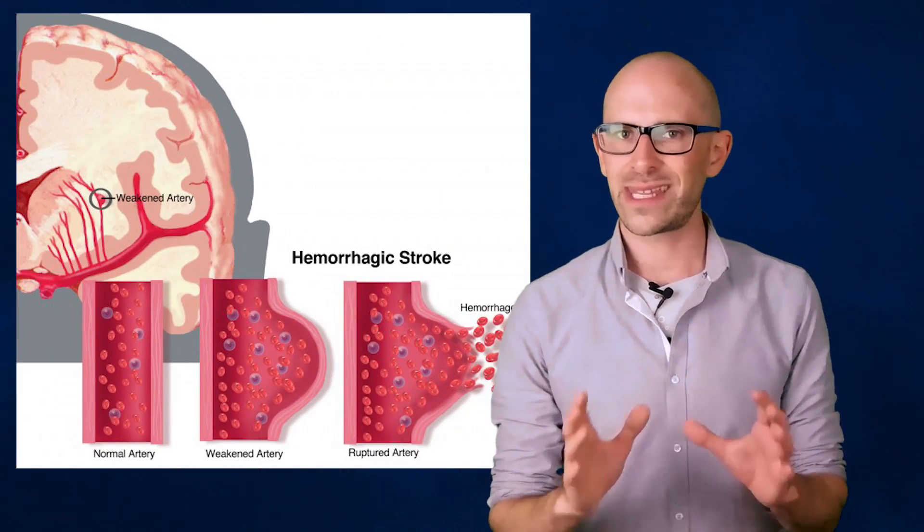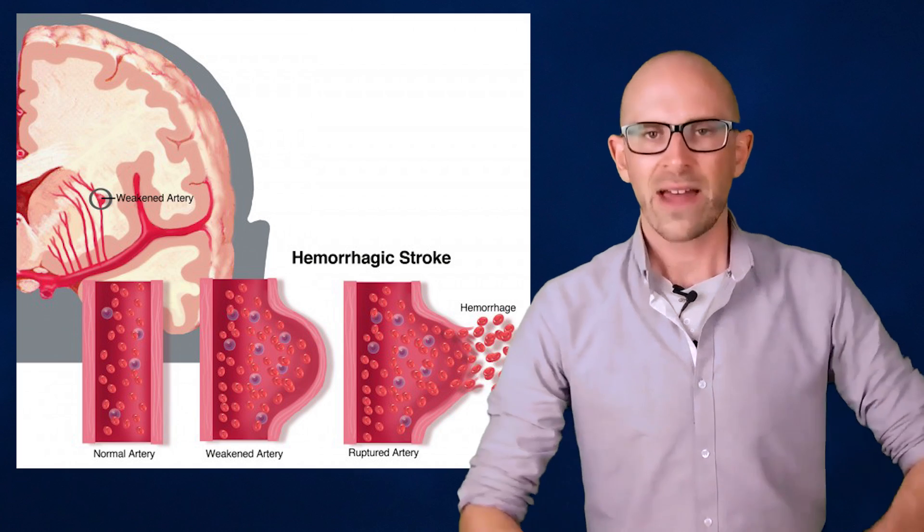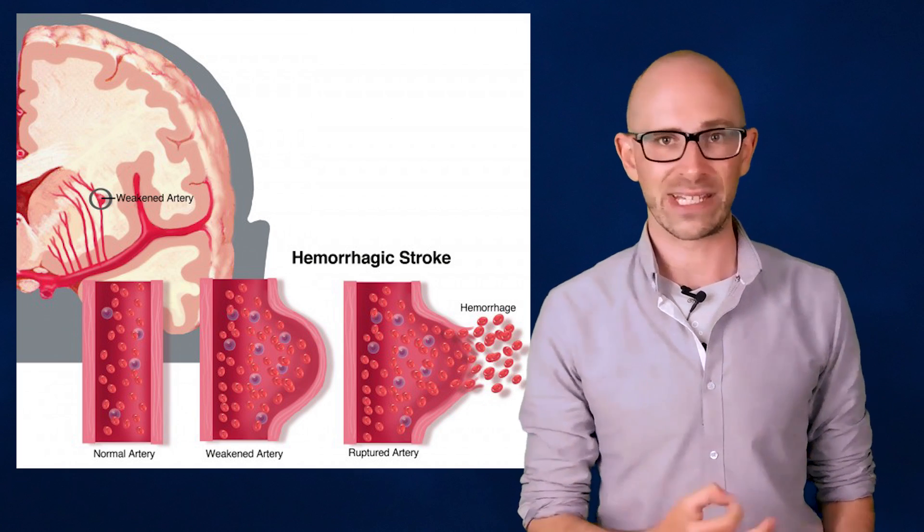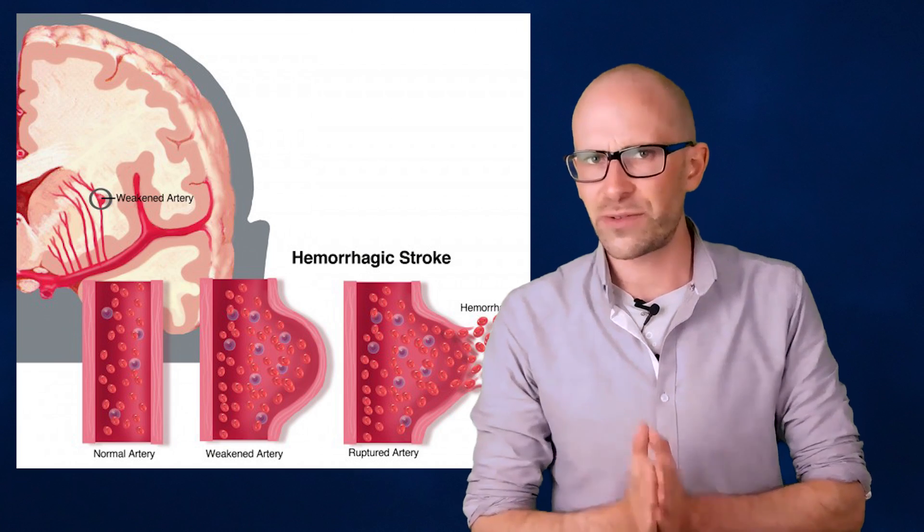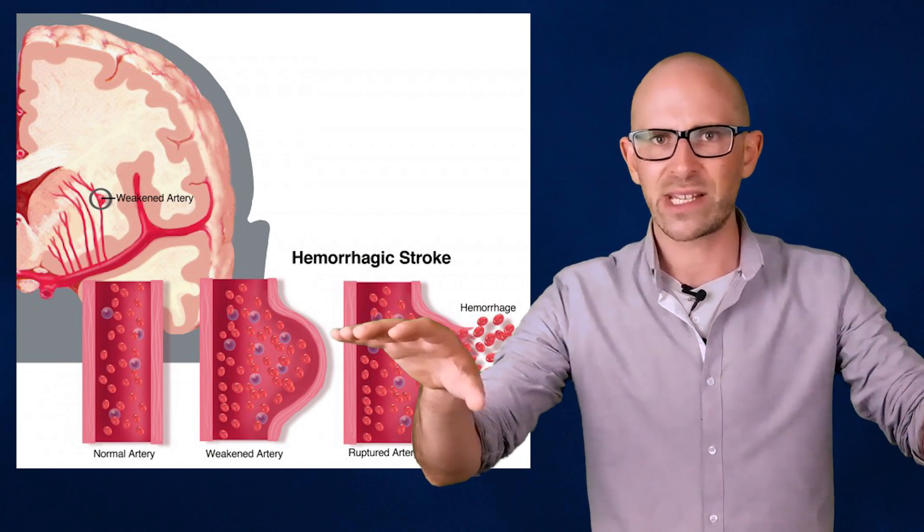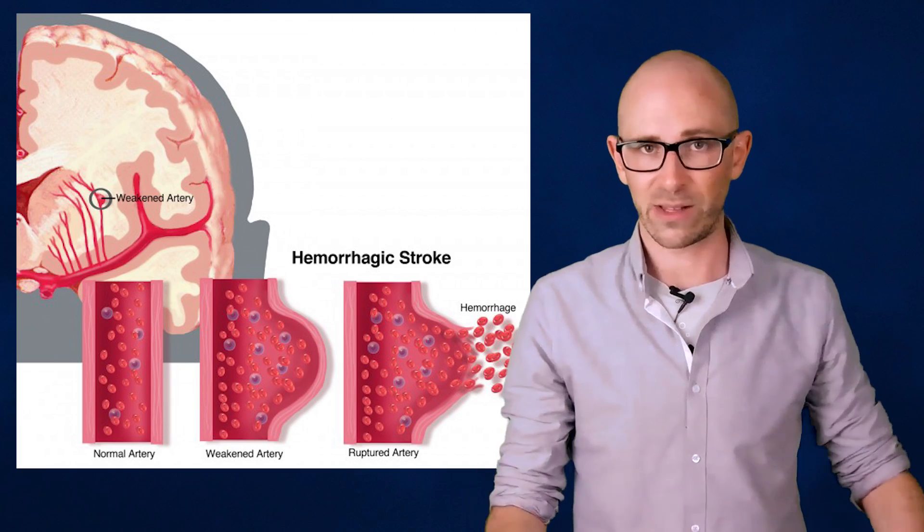Hemorrhagic strokes account for the other 20% of strokes. This type also results in blood flow to an area of the brain being interrupted. Instead of the artery being blocked though, it bursts open and the blood leaks out and does not get transported to the cells of the brain.